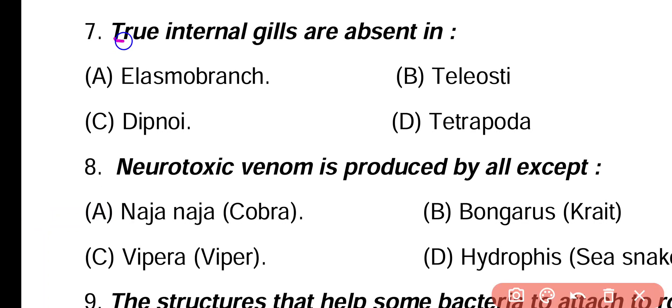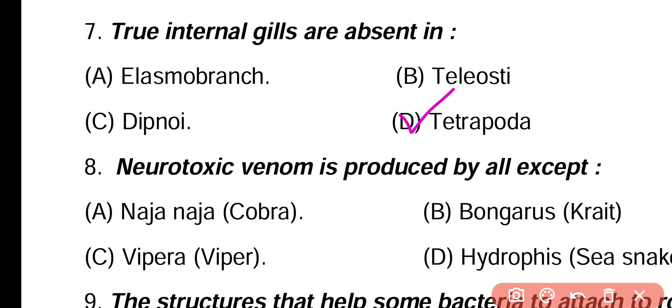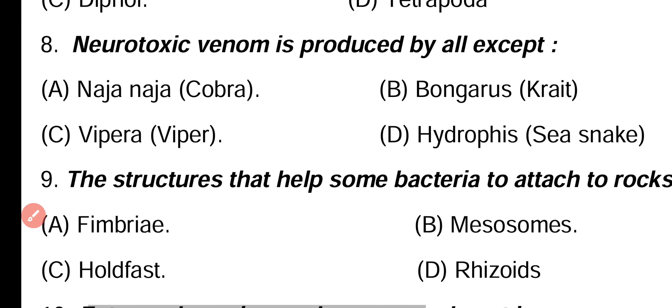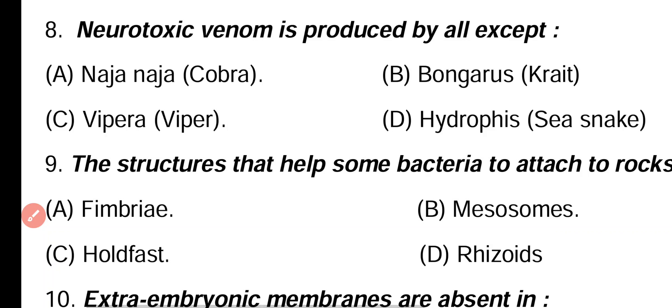Question 7. True internal gills are absent in: elasmobranch, teleostei, dipnoi, or tetrapod. Correct answer is option D. In modern tetrapods, true internal gills are absent.